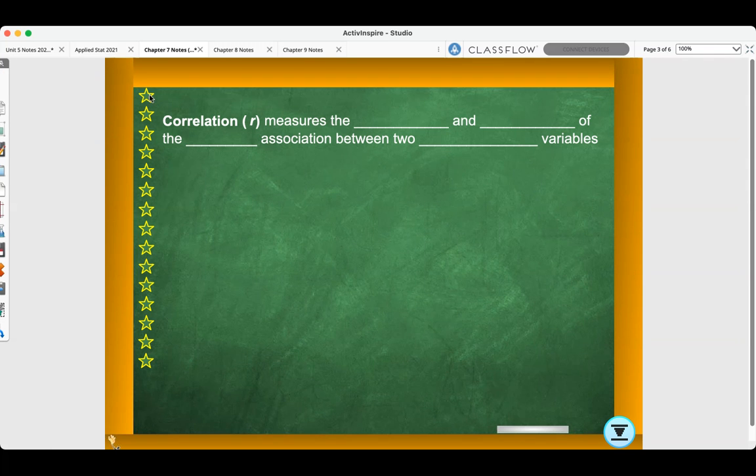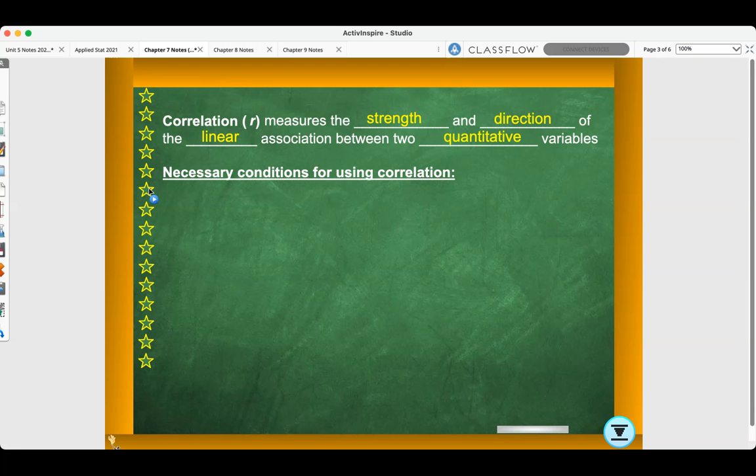Correlation R measures the strength and the direction of the linear association between two quantitative variables. Here are the necessary conditions for using correlation. Quantitative variables only. The term correlation should never be used when referring to categorical data.